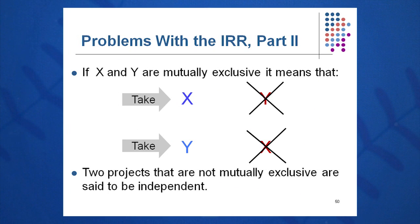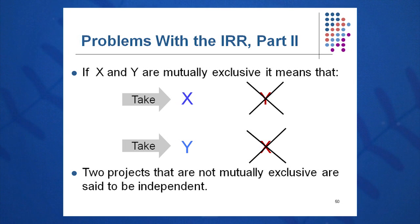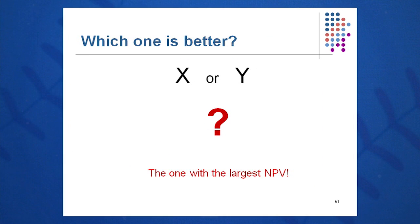Problem number two: be careful with mutually exclusive projects. For example, you have a piece of property and you're going to decide to either put a Sonic or an apartment building — you can't do both. If you take project X, you can't take project Y, and vice versa. These are said to be mutually exclusive. Which one is better, X or Y? The best way to look at this is to use NPV. Be careful with IRR for mutually exclusive projects.